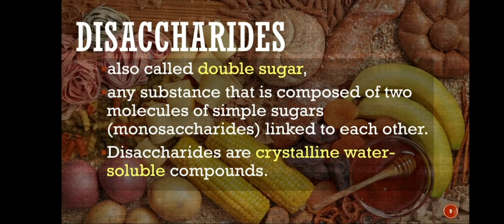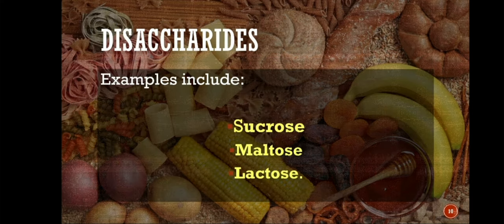Disaccharides are also called double sugars — any substance composed of two molecules of simple sugars or monosaccharides which are linked to each other. Disaccharides are crystalline water-soluble compounds. Examples of disaccharides include sucrose, maltose, and lactose.